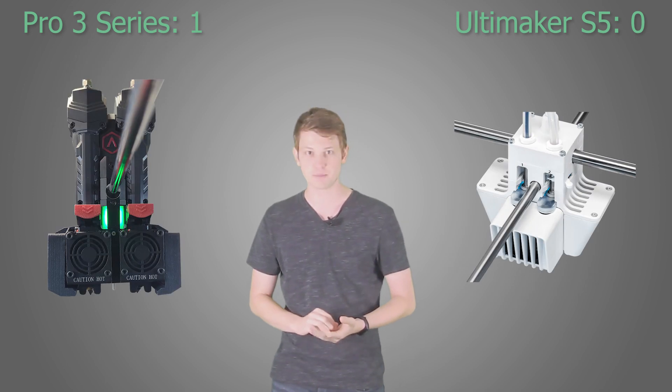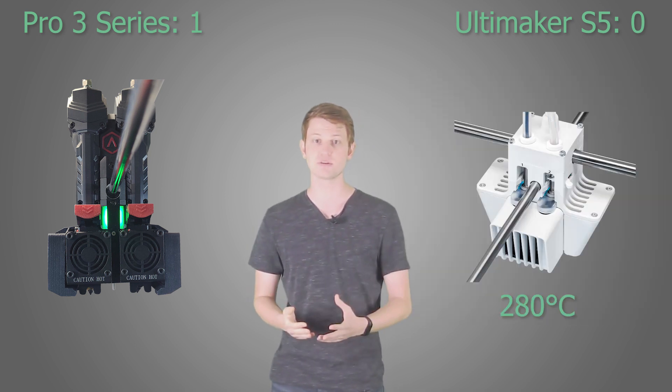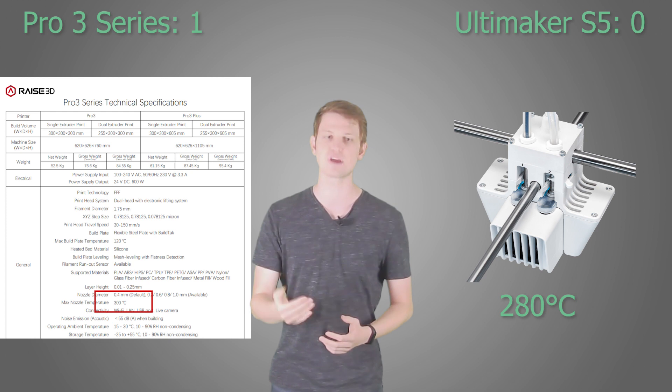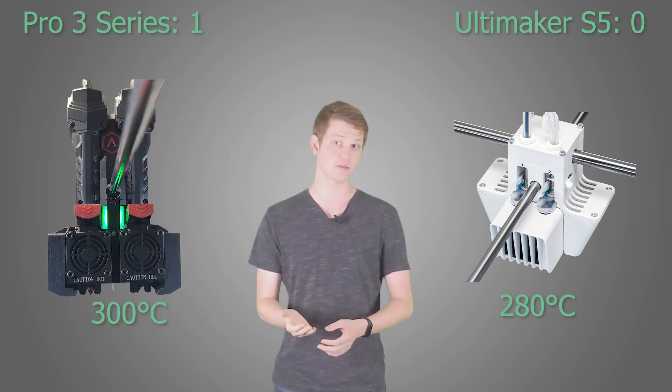Next up, extruder temperature. According to the tech specs, the Ultimaker can go up to 280 degrees celsius extruder temperature. The Pro 3 series can push its extruders all the way to 300 degrees. Still not enough to print PEEK, but nonetheless higher than the Ultimaker.